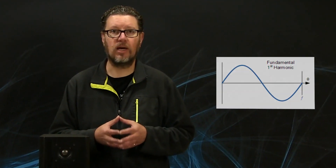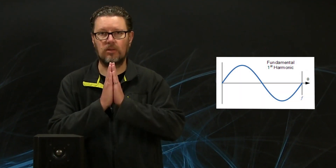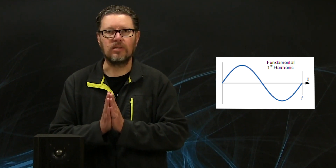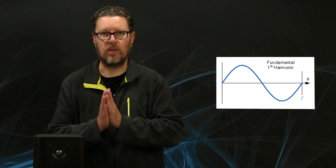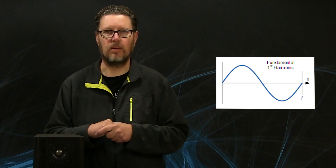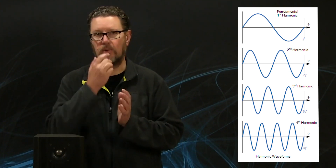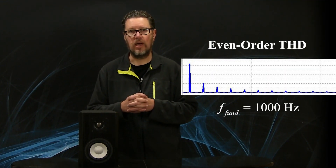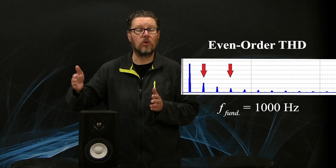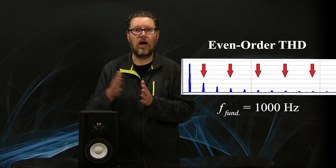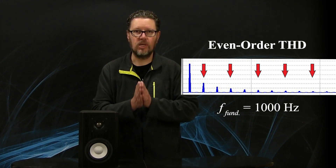If we take something simple like a sine wave — that's a very pure single frequency — let's say it's 1,000 hertz as a nice round number. You're going to have harmonics at multiples of that 1,000 hertz sine wave. You may have even order distortion at 2, 4, 6, 8, 10, 12, et cetera times the frequency of that original sine wave.